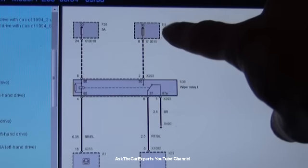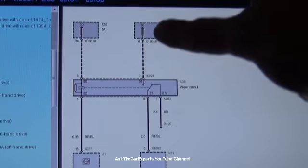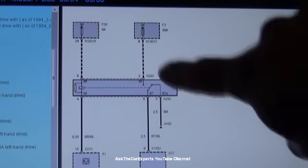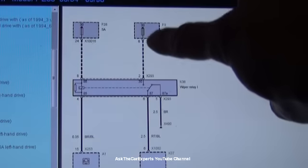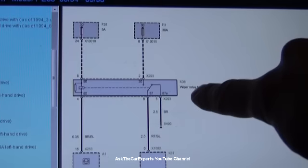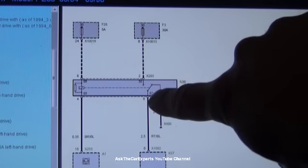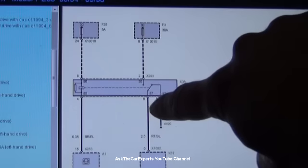Alright, now over here, Fuse 3, it's a 30 amp fuse. This is actually the feed side for wiper relay 1. So you can check Fuse 3, power at pin 2 at the wiper relay. And then if it's activated, you should have power coming out on pin 6.